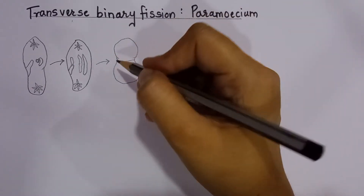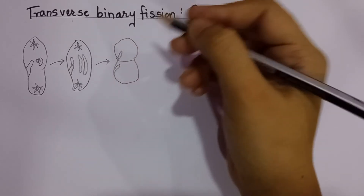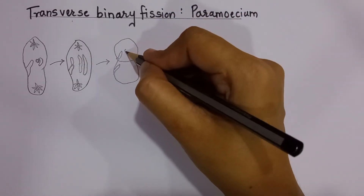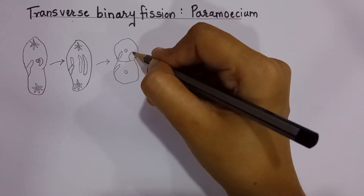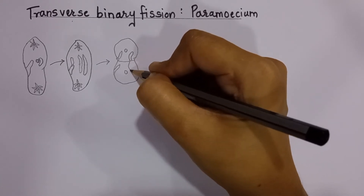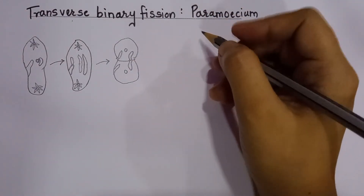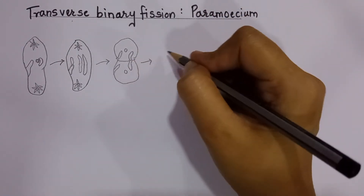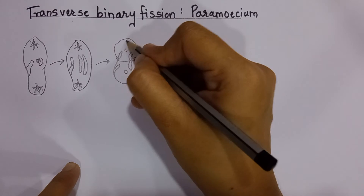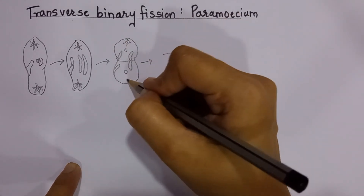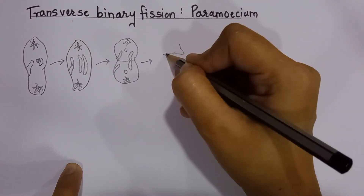Now we can see the change in shape of the Paramecium. This particular portion comes one on each side, and this part becomes round again. In this step they are dividing — you can see this line representing transverse binary fission. In the next step we show them separately, so we detach them. The flower part goes one at the top and one at the bottom.